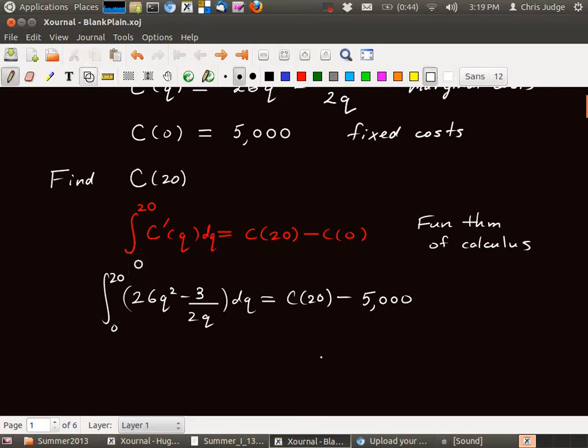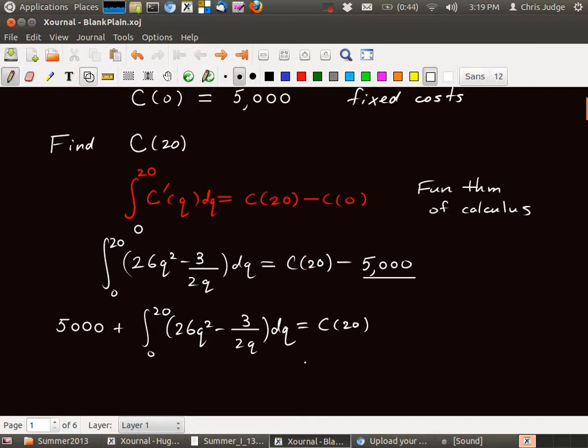We add 5,000 to both sides. So we get 5,000 plus the integral of 0 to 20, 26Q squared minus 3 over 2Q DQ equals C of 20. So that's it.